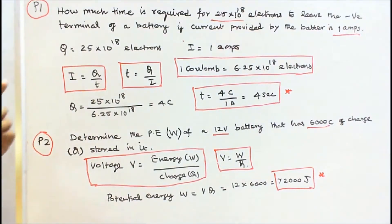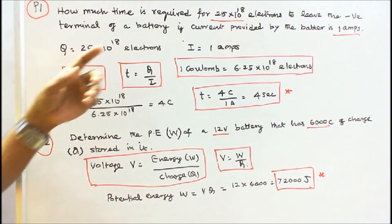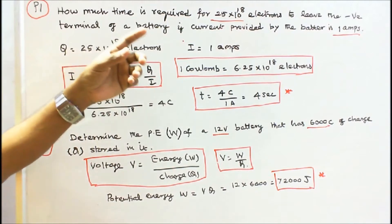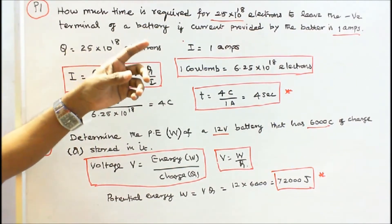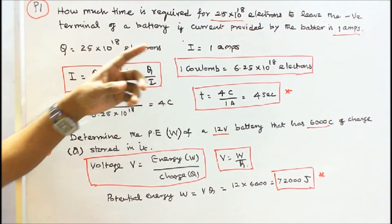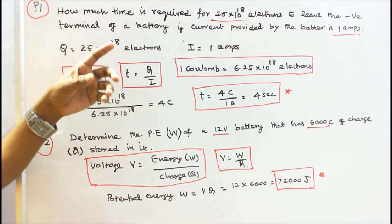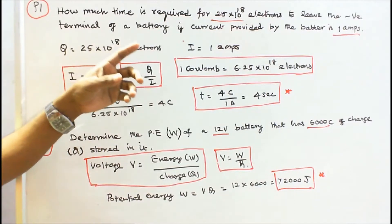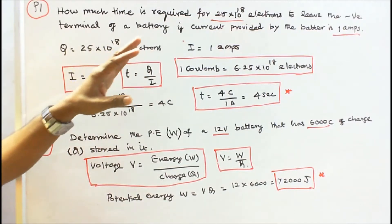Problem 1: How much time is required for 25 × 10^18 electrons to leave the negative terminal of a battery if the current provided by the battery is 1 amp?